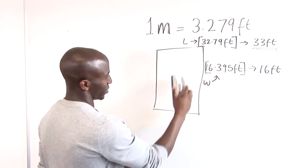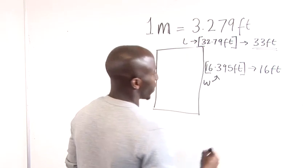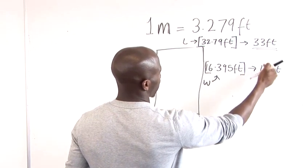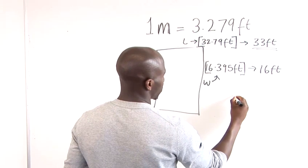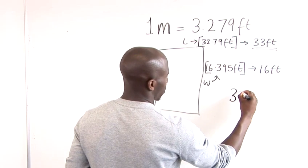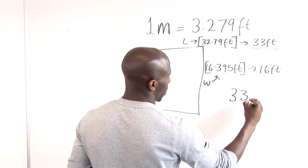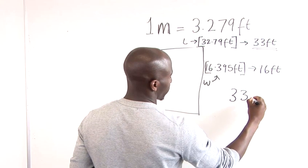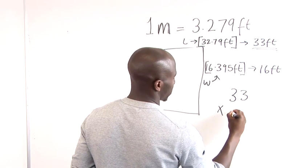So in order to calculate the square feet here, what we need to do here is just multiply these two things together. So the first thing I would do is just write out here 33 and we have times 16.